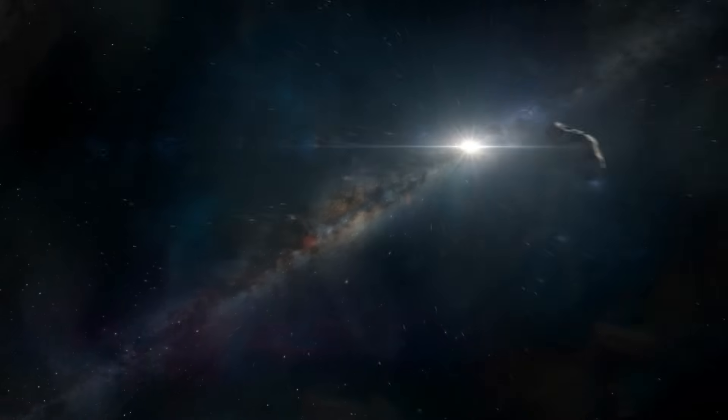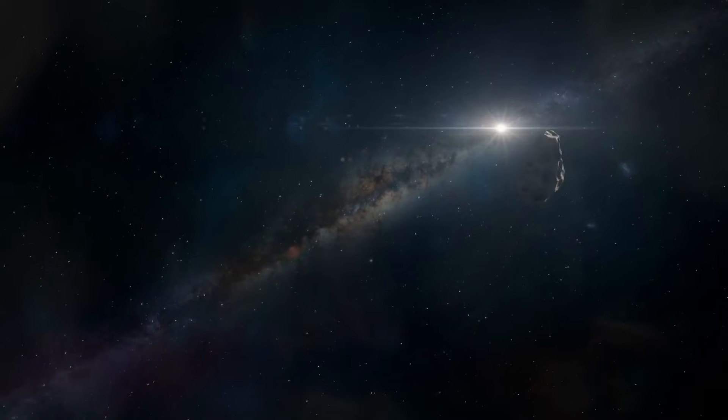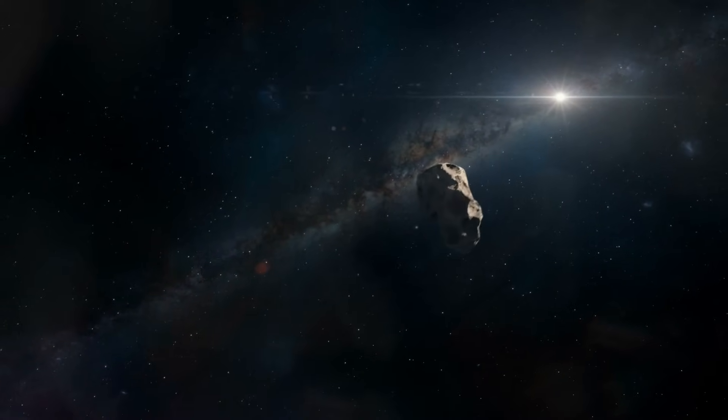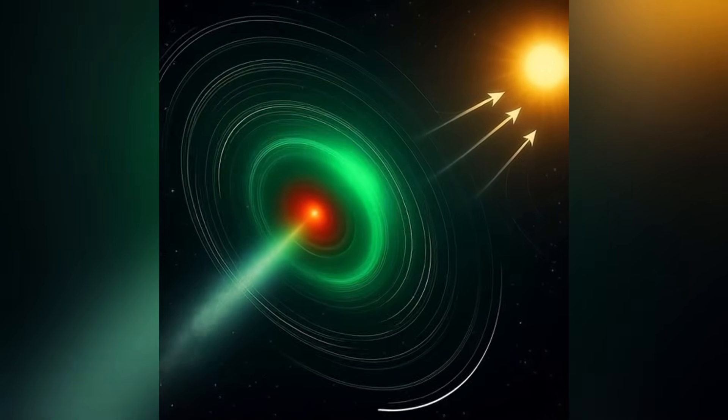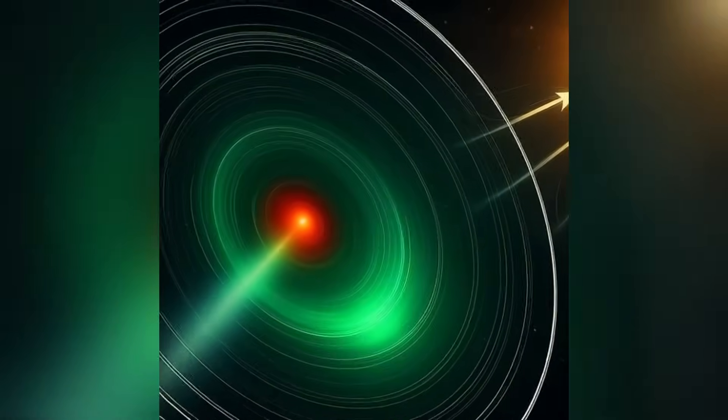The physics of comets in our solar system offers some guide. When sunlight heats a comet's nucleus, frozen gases sublimate, venting outward and dragging dust with them. Solar radiation pressure and the solar wind then shape that material into tails that always point away from the sun.